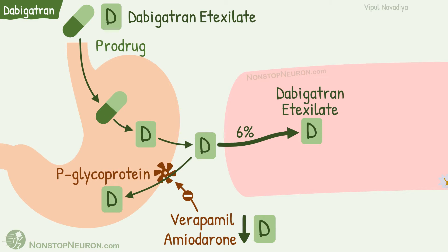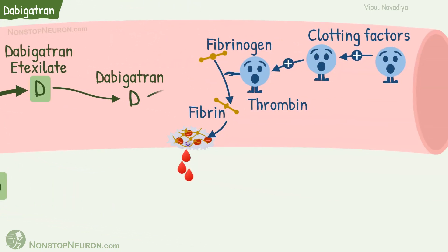In the blood, inactive dabigatran etexilate is rapidly converted to active dabigatran by plasma esterases. It then inhibits the active site of thrombin, so fibrin is not generated and as a result coagulation is impaired.